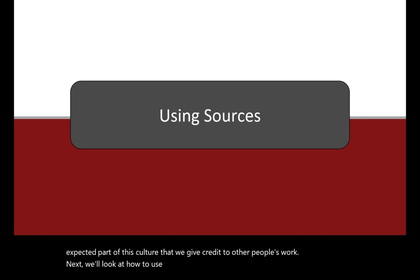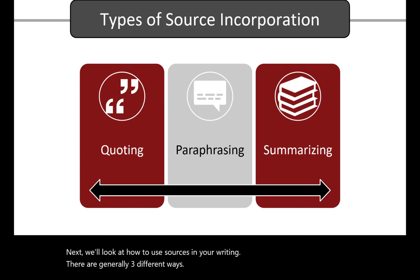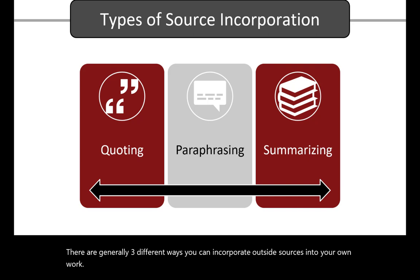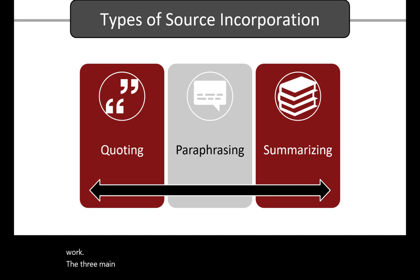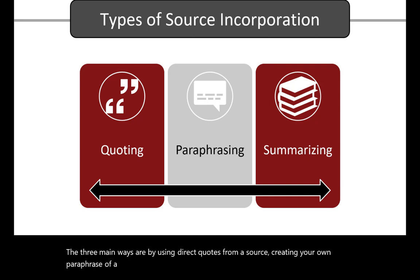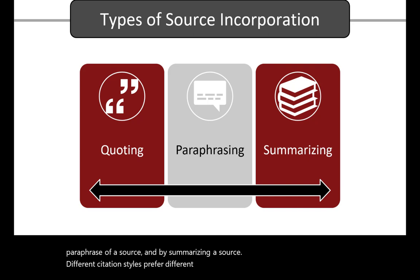Next, we'll look at how to use sources in your writing. There are generally three different ways you can incorporate outside sources into your own work. The three main ways are by using direct quotes from a source, creating your own paraphrase of a source, and by summarizing a source. Different citation styles prefer different ways of source use, so we'll address what APA prefers in the next few slides.